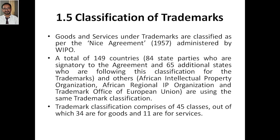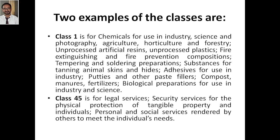To recap, there are 45 classifications total — 34 for goods and 11 for services. Class 1 covers chemicals used in industry or research, photography, agriculture, horticulture, and forestry. It also includes unprocessed artificial resins, unprocessed plastics, fire extinguishing and fire prevention compositions, all under the Nice Agreement 1957.